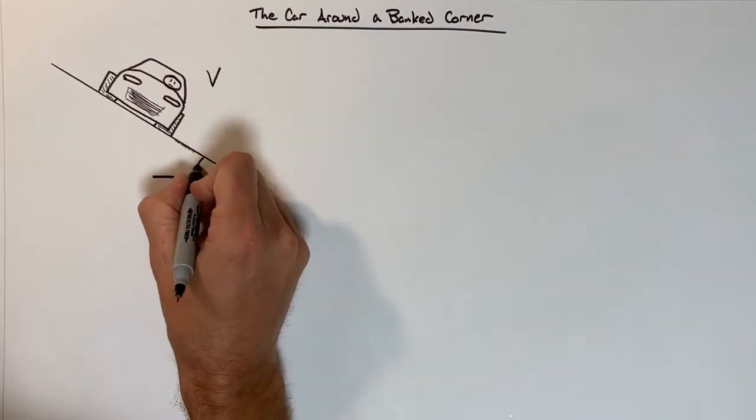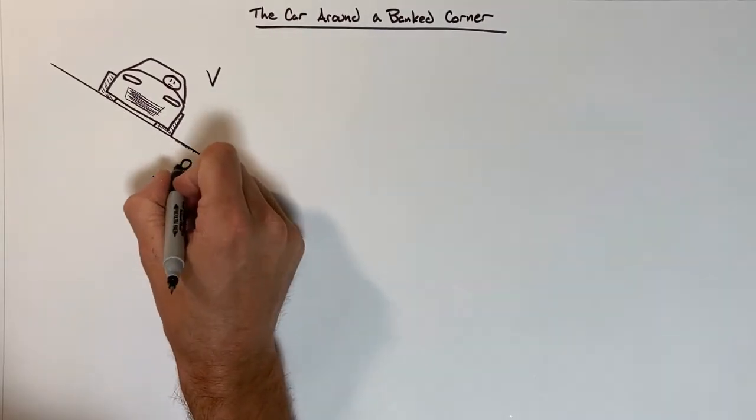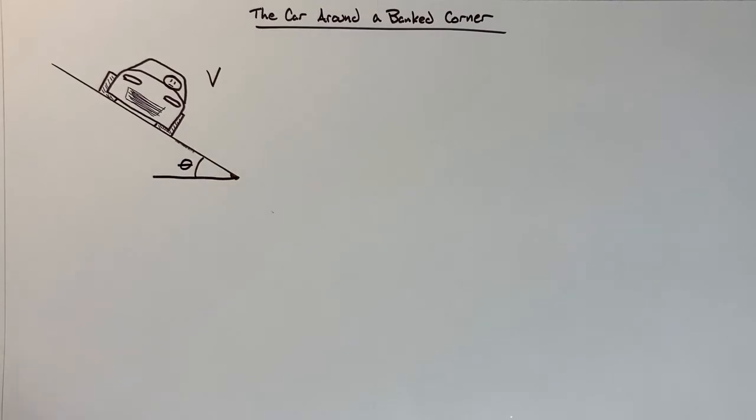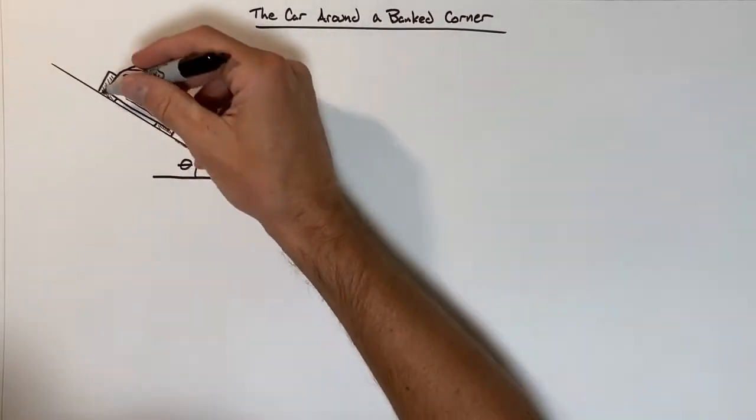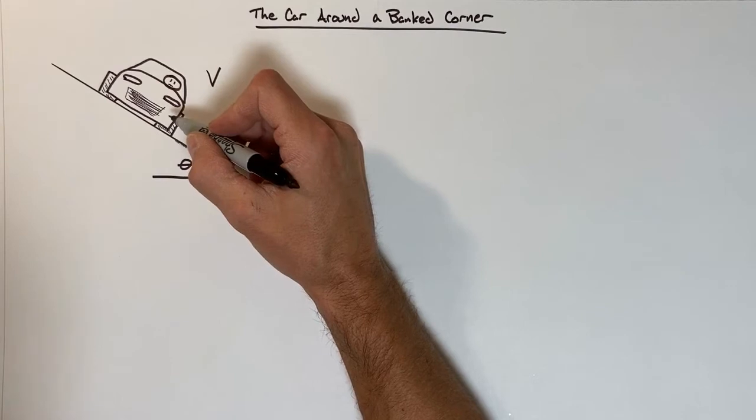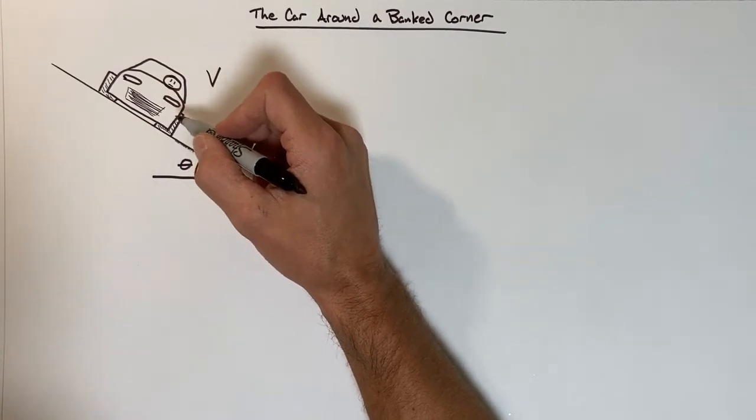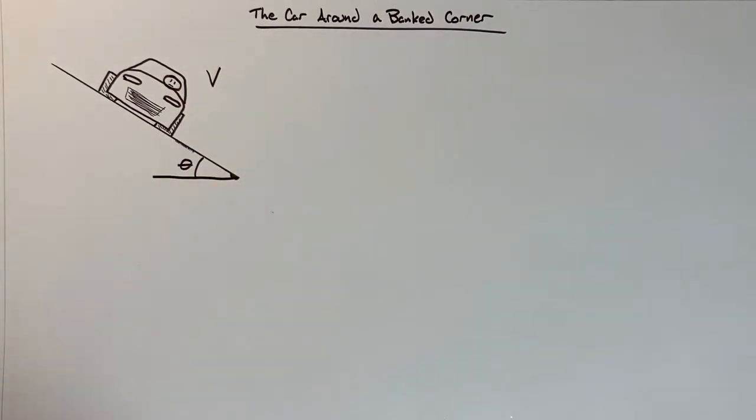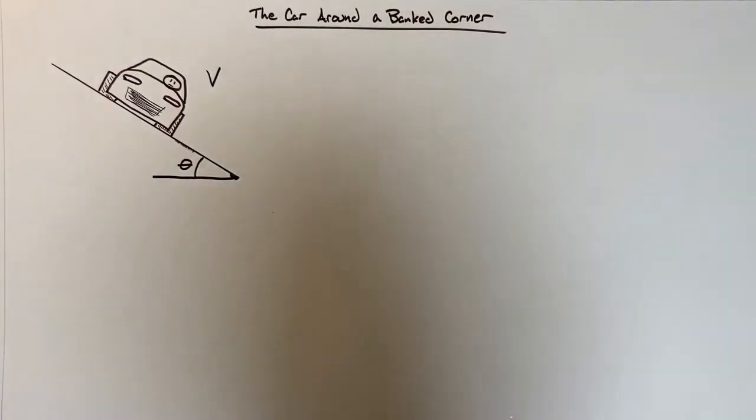Now this hill is angled at some angle theta. What we're going to do in this problem is say that we don't want there to be any friction between the tires and the road. We want to find the perfect velocity for this car to travel around this corner.